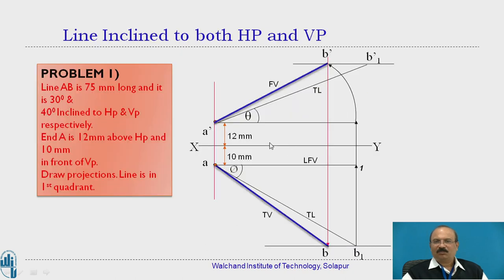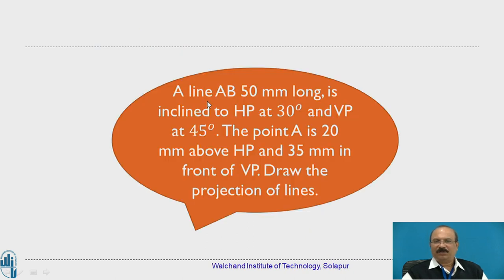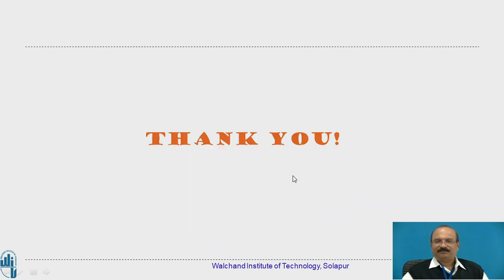So now this concludes the problem — this is the solution for the given problem. In the same way, one more problem: a line AB 50 mm long is inclined to HP at 30 degrees and to VP at 45 degrees. The second angle is changed. Point A is 20 mm above the horizontal plane and 35 mm in front of the vertical reference plane. Draw the projection of the line. First draw the XY line. The 20 mm comes above the horizontal reference plane and the 35 mm comes below the XY line.